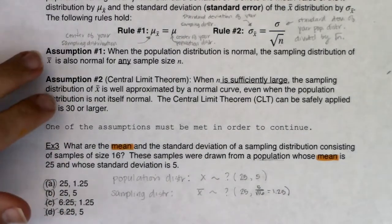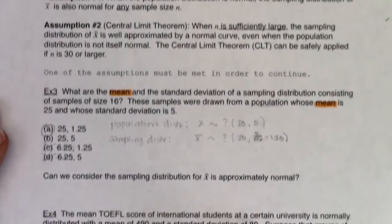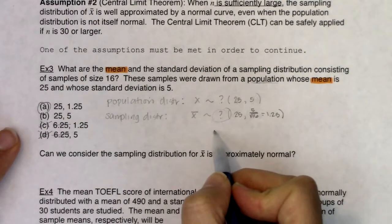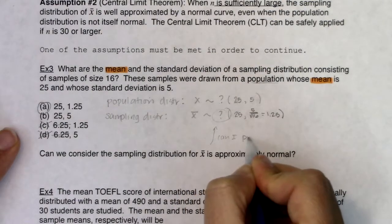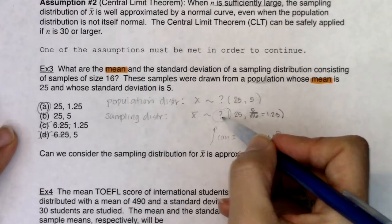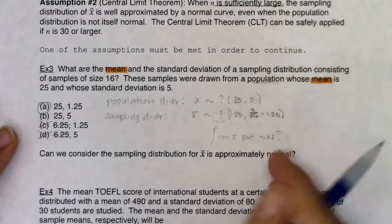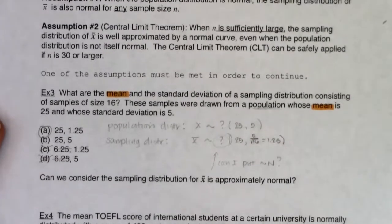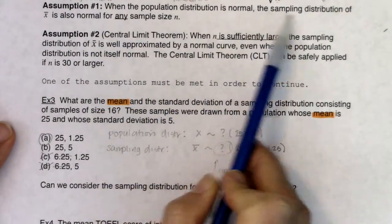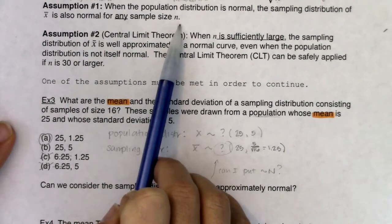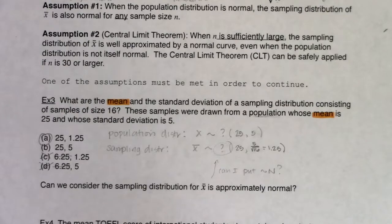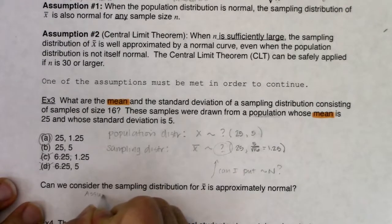I want to go a little further and talk about both assumptions. The question is: can we consider the sampling distribution approximately normal? We want to put the N there because once we do, we can use normal CDF. In mean land, there are two ways to get normality. Let's check assumption 1: when the population distribution is normal, the sampling distribution is also normal for any sample size.